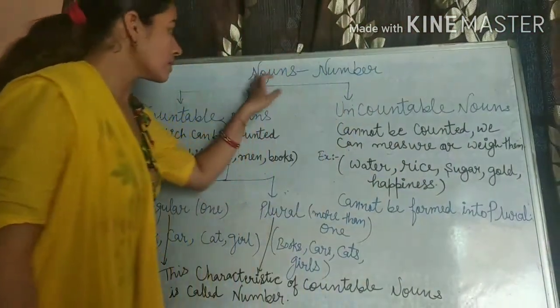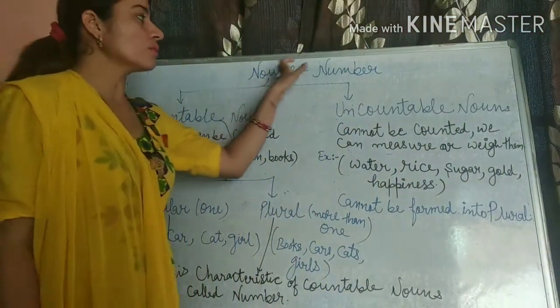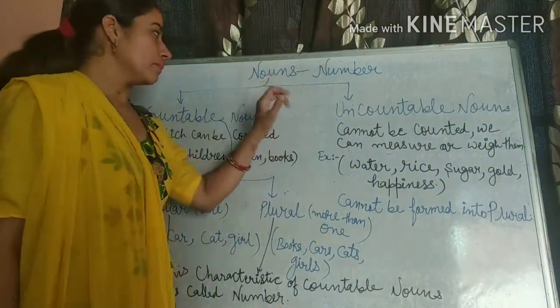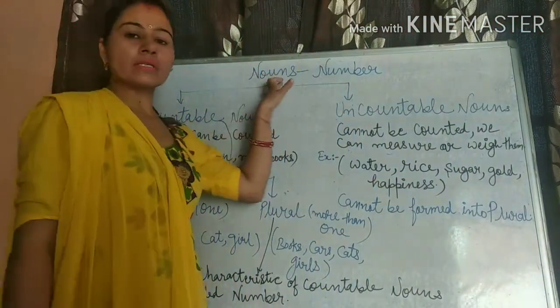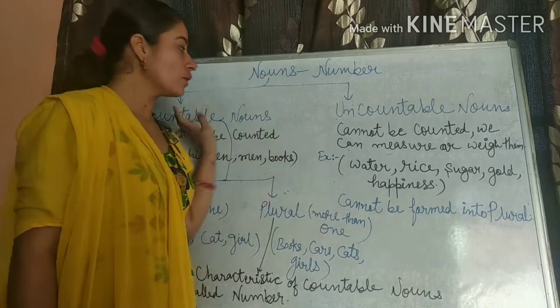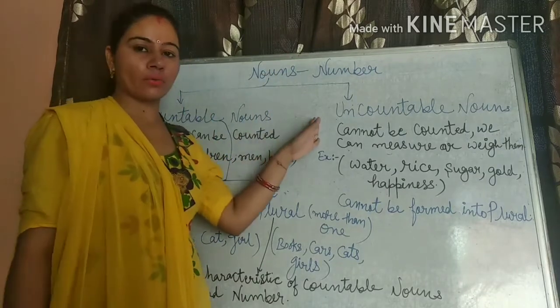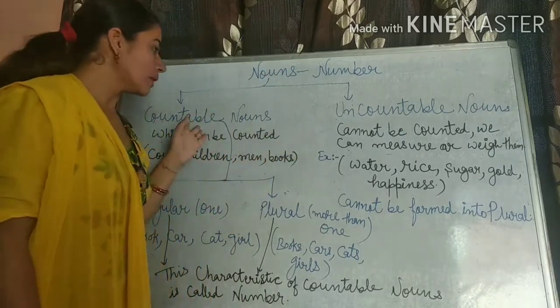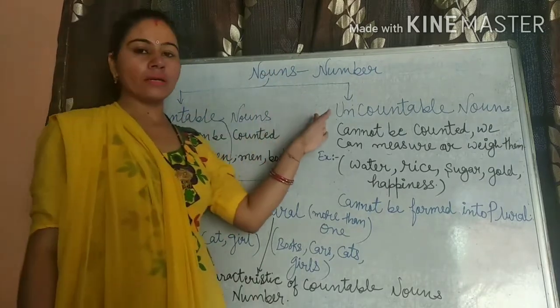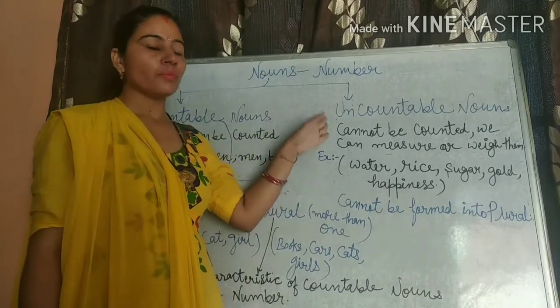Hello students. Today I am teaching nouns and number. Firstly, noun. There are two types of noun: countable noun and uncountable noun.